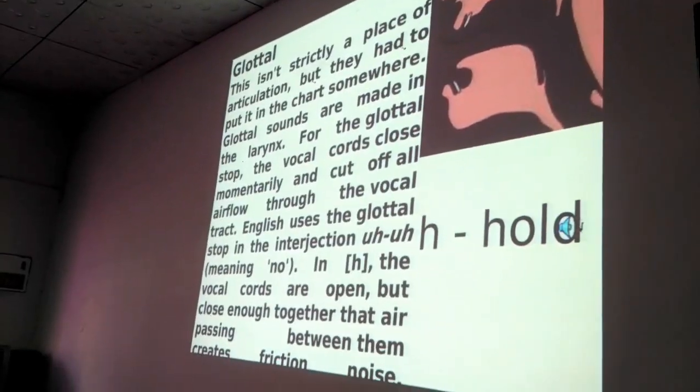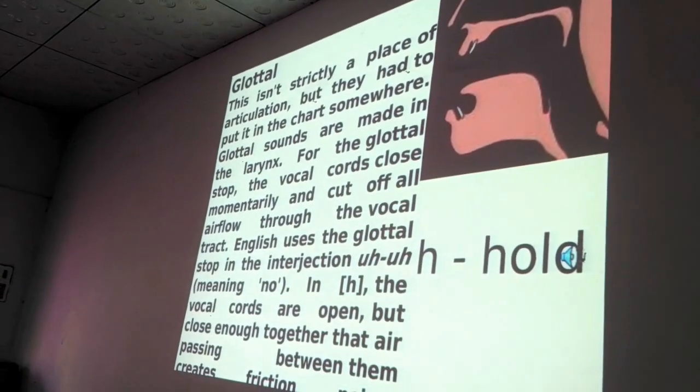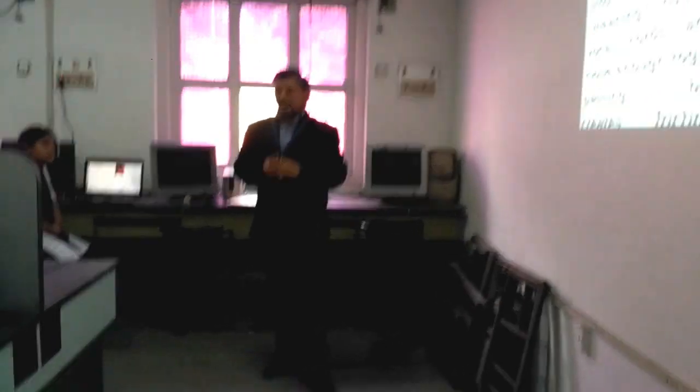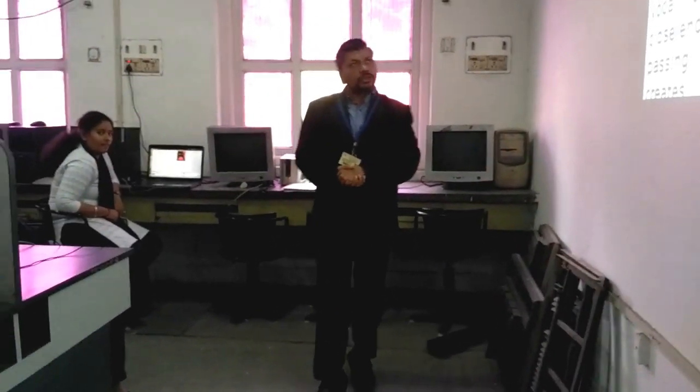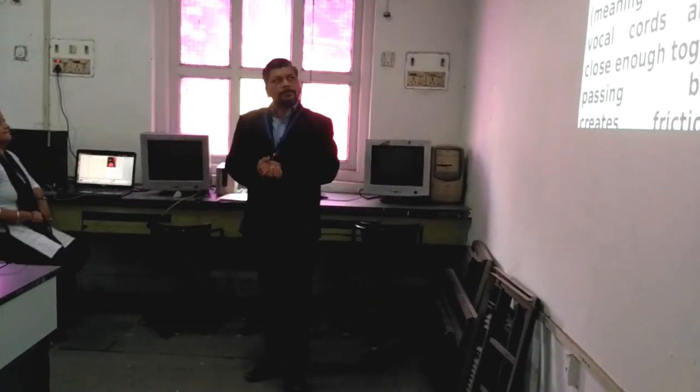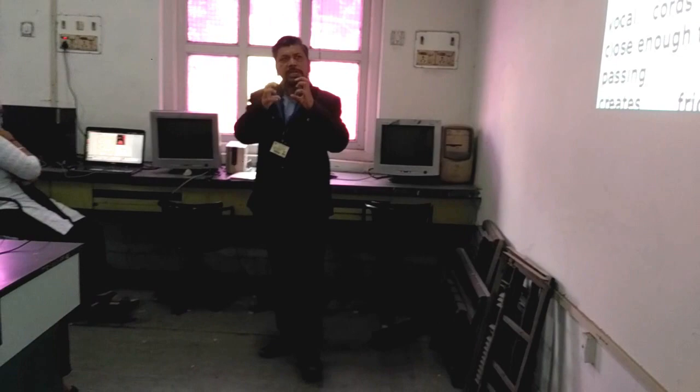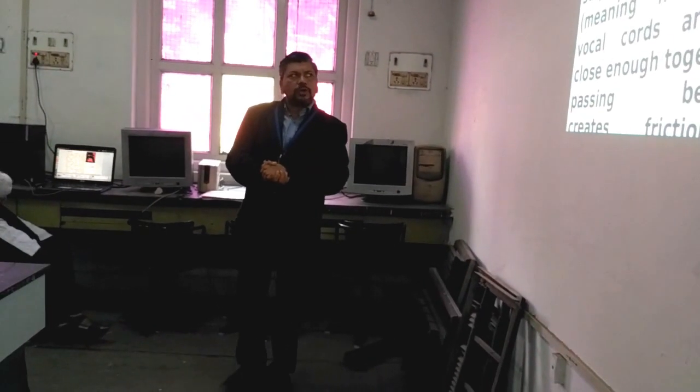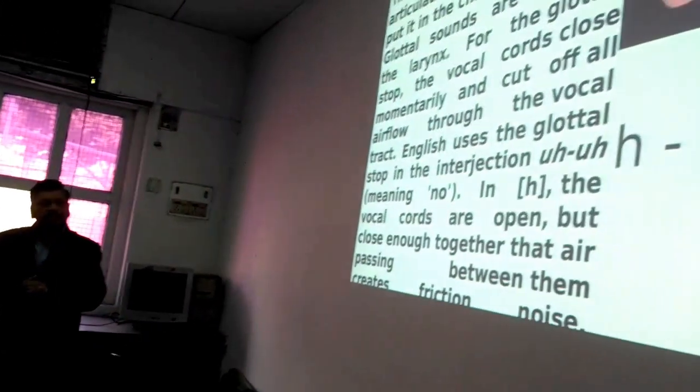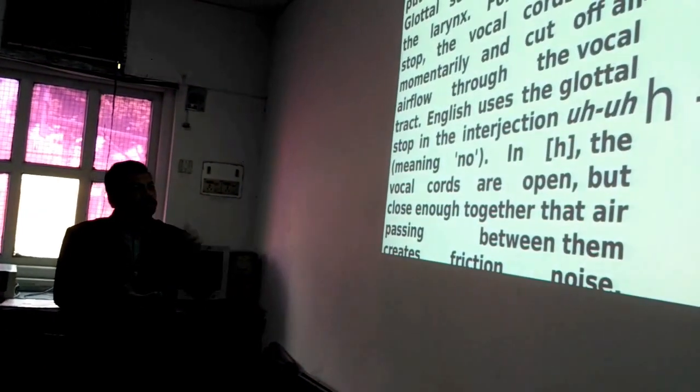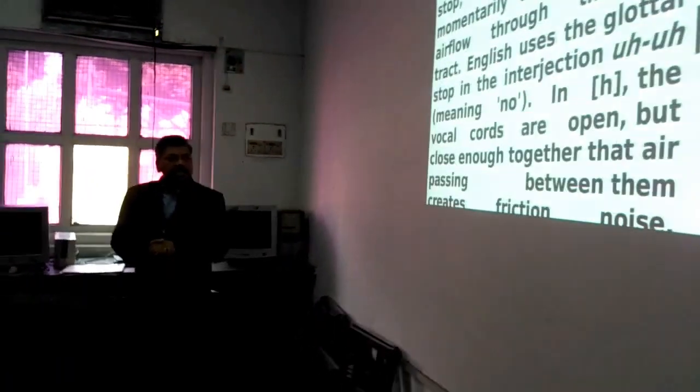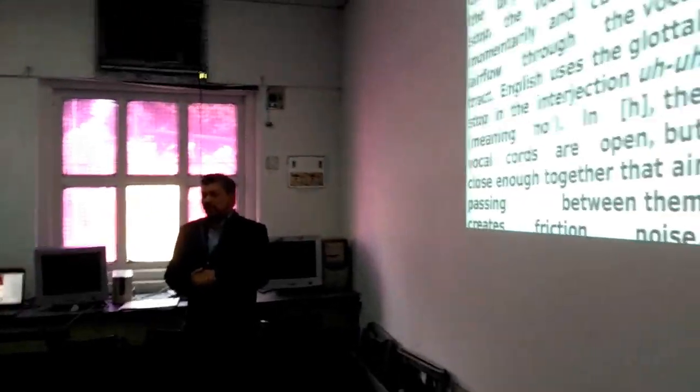Glottal sound. This is not strictly a place of articulation as shown in picture, but they have to put it somewhere. Here, mouth passes wide open and air rushes through like H. Are you happy? H as in hold. There we find glottal sounds are made in the larynx. For the glottal stop, the vocal cords close momentarily and cut off all air flow through the vocal tract. English uses glottal stop in the interjection meaning no. In H, the vocal cords are open but close enough together that air passing between them creates friction noise.